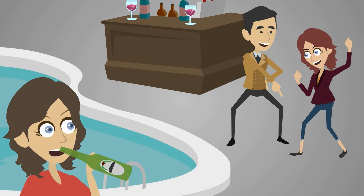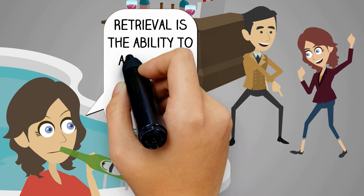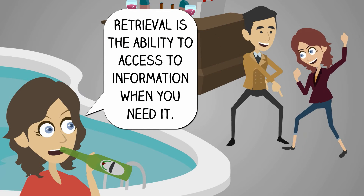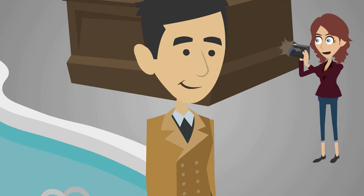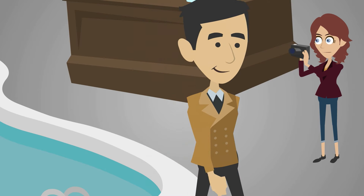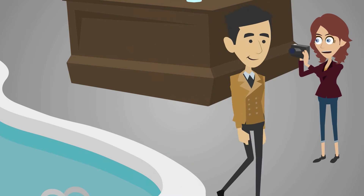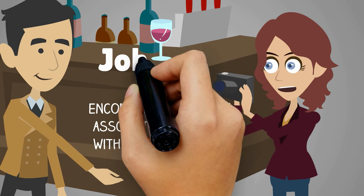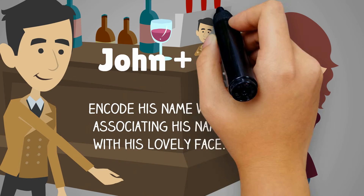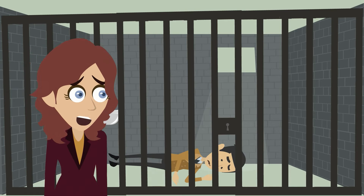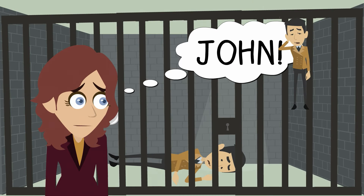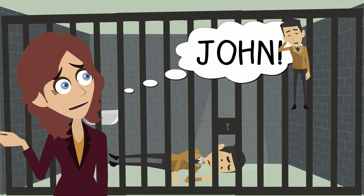Now, back to the three stages. Retrieval is the ability to access information when you need it. When I met your dad at a party for the first time, I encoded his name while associating his name with his lovely face and stored that information in my mind until the next time I saw him and recognized his face to retrieve his name.